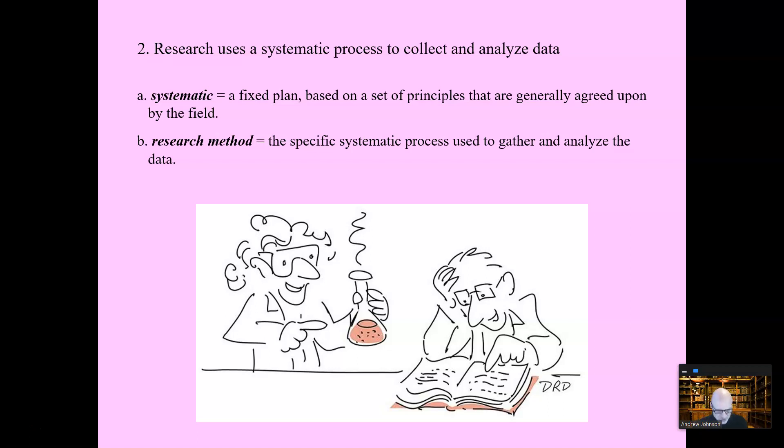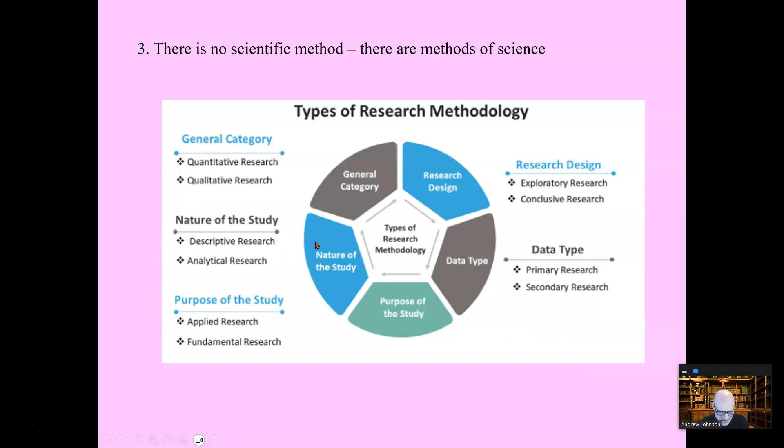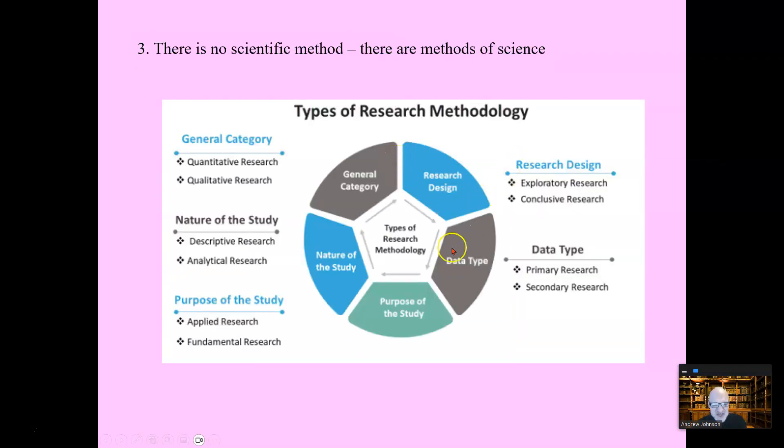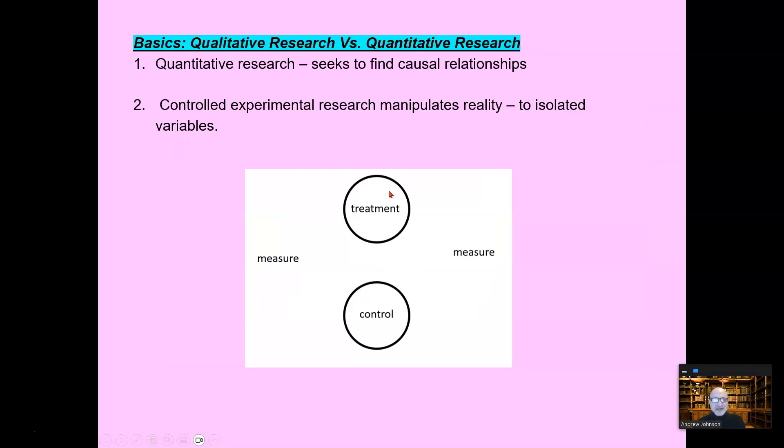Now, there is no scientific method. And I know that will freak people out. There are methods of science. Science includes, by the way, the scientific method, qualitative and quantitative research. Observational research, ethnographic research, descriptional research. All different types. All different methods of science. There's no such thing as the method of science.